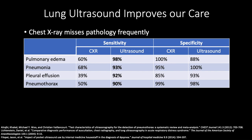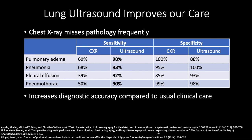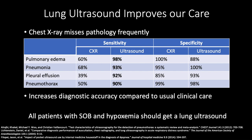In summary for this module, lung ultrasound really improves our diagnostic accuracy because chest x-ray misses this pathology so frequently. Lung ultrasound is way more sensitive for pulmonary edema, pneumonia, pleural effusions, and pneumothorax compared to chest x-ray. This increased diagnostic accuracy has been demonstrated in patients admitted to the emergency department — using lung ultrasound, you'll be more accurate on day one figuring out what's going on in patients with shortness of breath. I really think all patients with shortness of breath or hypoxemia should get a lung ultrasound.